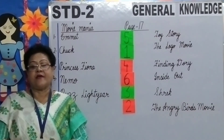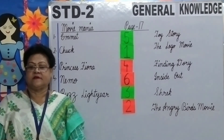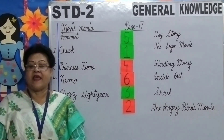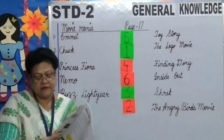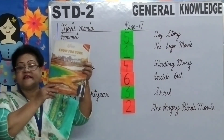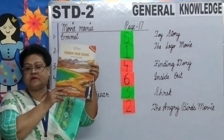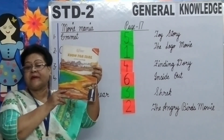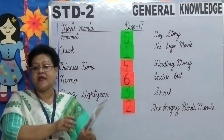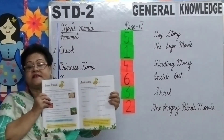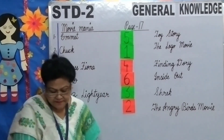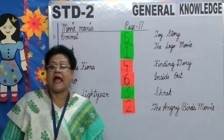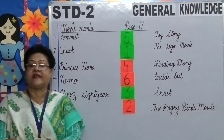Children, today we learned two topics: Green Friends and Movie Mania. This is your General Knowledge book. Children, read the pages thoroughly and do the exercises given in these pages. Thank you, children, and have a great day.